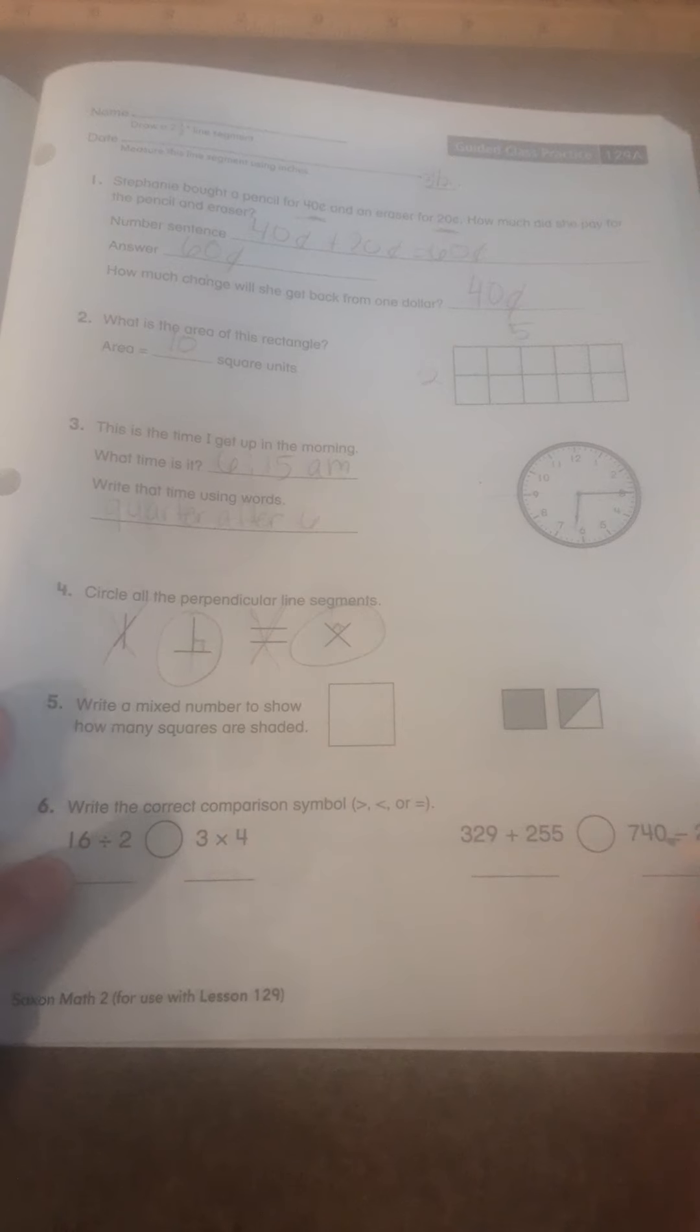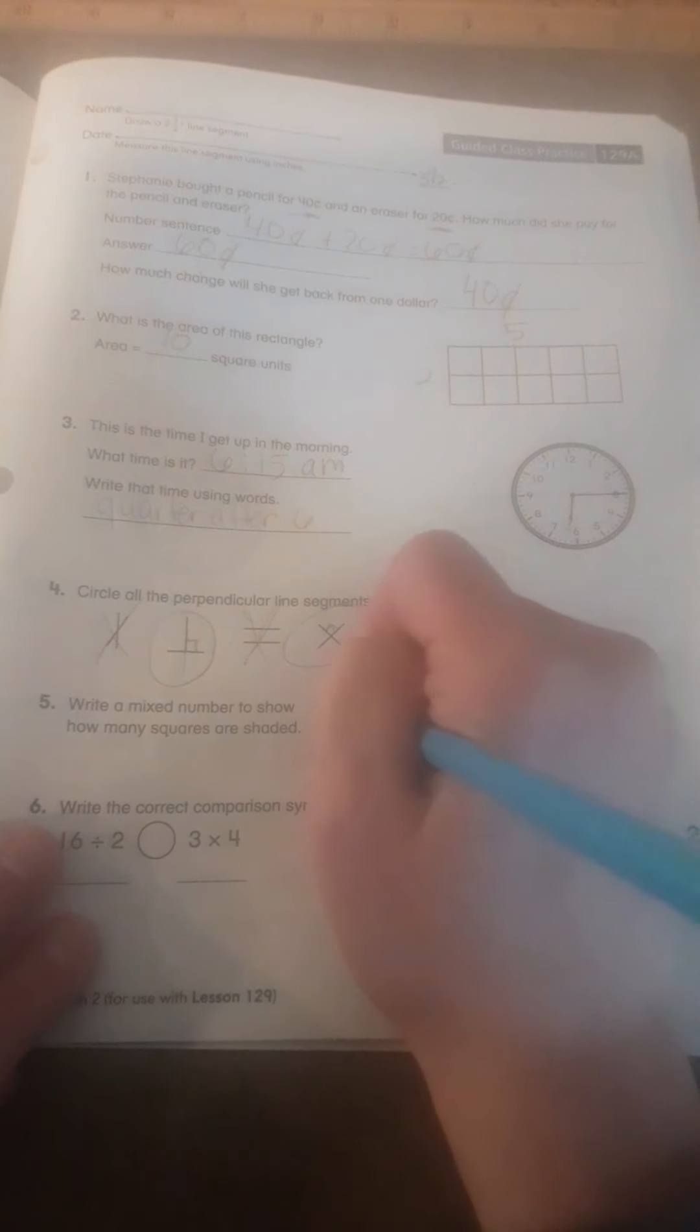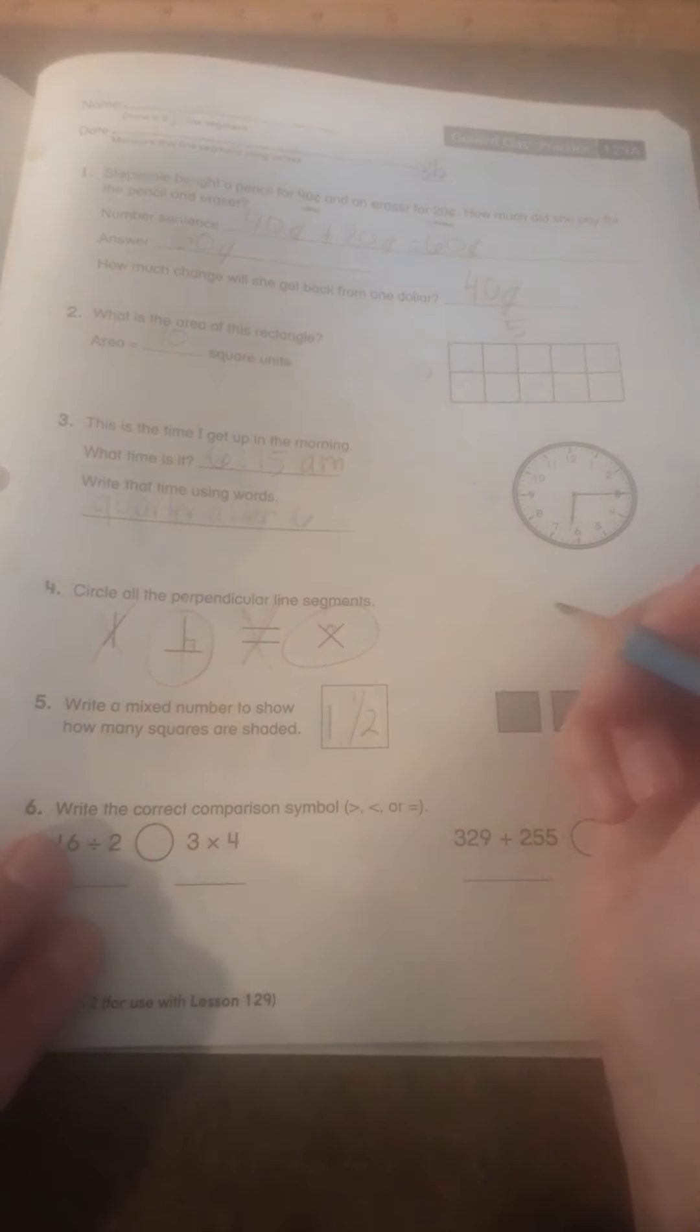Write a mixed number to show how many squares are shaded. Well, how many are totally shaded? That would be 1 and a half. 1 and a half.